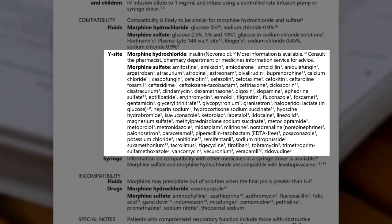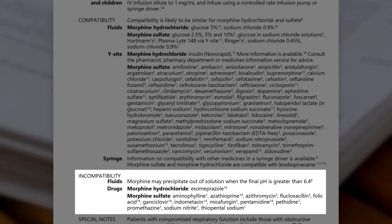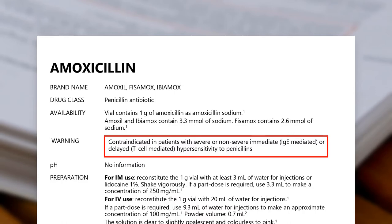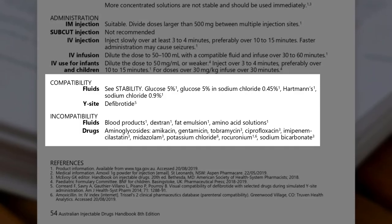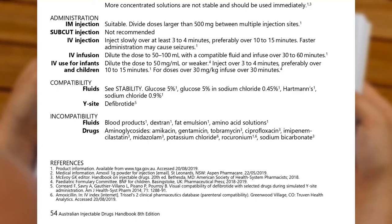For instance, if a line is running an infusion of ceftriaxone, it would be possible to give an injection of morphine sulfate at the Y-site. But if the line was running amoxicillin, which is not listed as compatible or incompatible at Y-site, you should check the amoxicillin monograph too. If morphine is not listed there either, the answer is we don't know, and so it's safest to assume that it cannot be mixed.